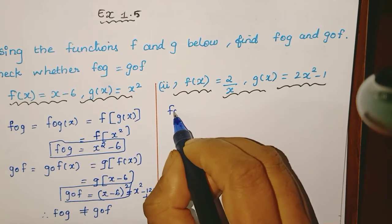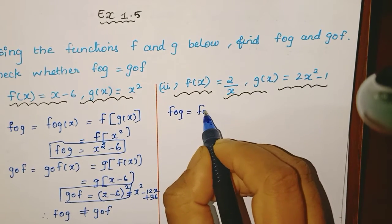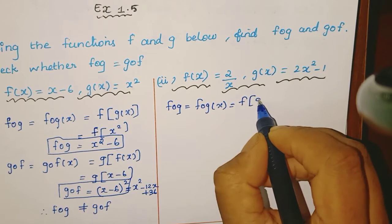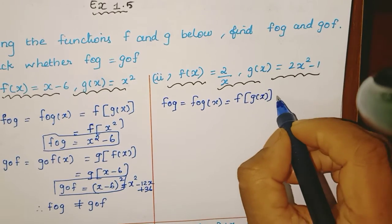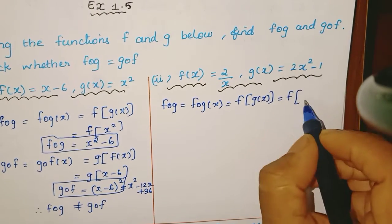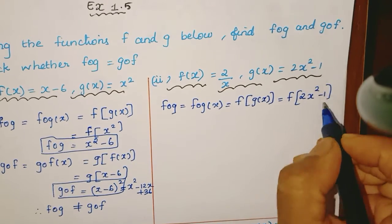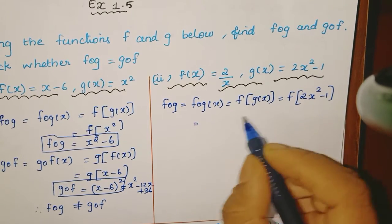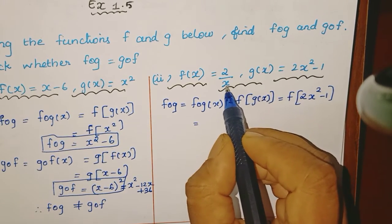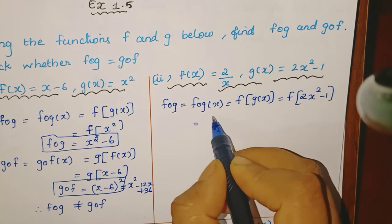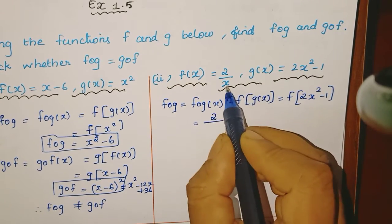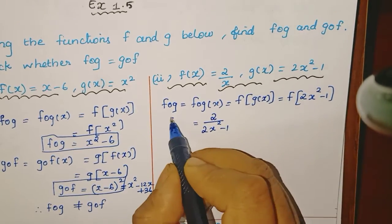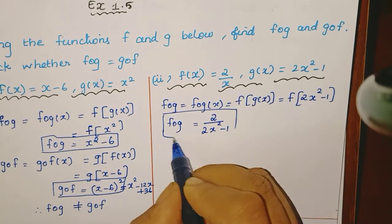The next question: f composition g of x equals f of g of x. Here g(x) = 2x² minus 1. So we go to function f. f is 2 by x. Wherever x appears, we replace it with 2x² minus 1. So the denominator becomes 2x² minus 1. This gives us f composition g of x equals 2 divided by (2x² minus 1).